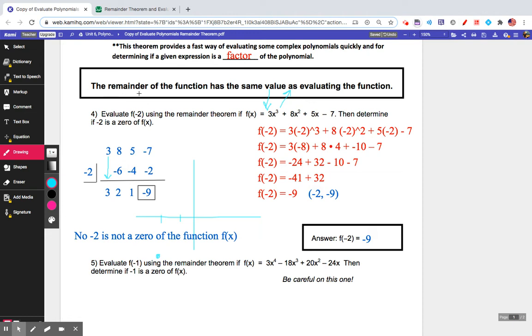The remainder of the function, this -9, has the same value as evaluating the function at -2. So that's another reason why f(-2) = -9.